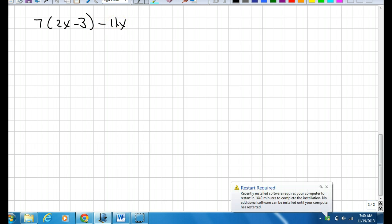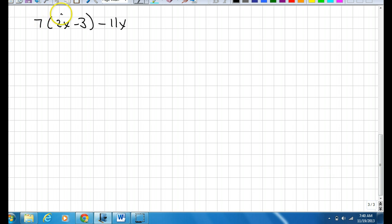The last few examples I have for you is simplifying algebraic expressions without replacing the x or y values with an actual value. The first one I want to look at is this one. So first we will want to do the distribution on this. So it'll be 7 times 2x and 7 times negative 3. So that would be 14x minus 21 minus 11x.